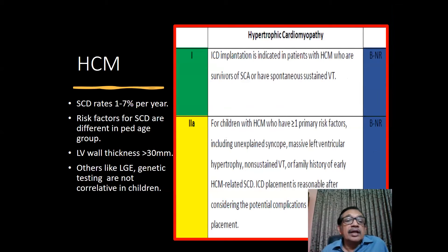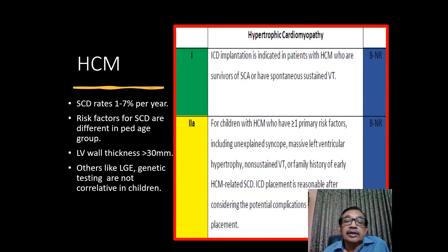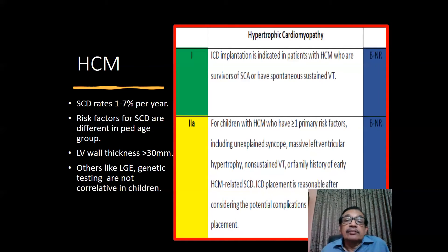In hypertrophic cardiomyopathy, the sudden cardiac death rate is 1 to 7% per year. The risk factors for sudden cardiac death are actually different in the pediatric age group — specifically, risk factors like LGE and genetic testing are not really correlated in children. It is a Class 1 indication for ICD implantation in hypertrophic cardiomyopathy in patients who are survivors of sudden cardiac arrest or who have spontaneous sustained VT.